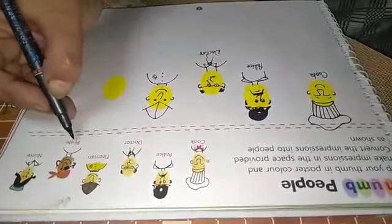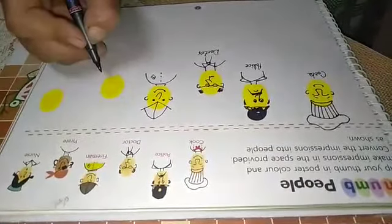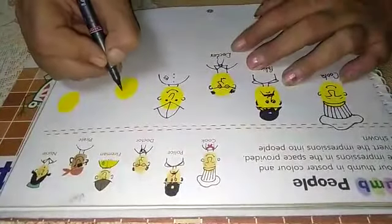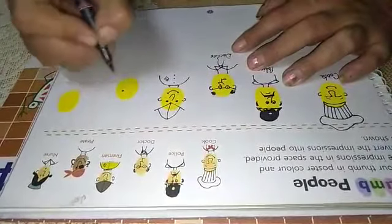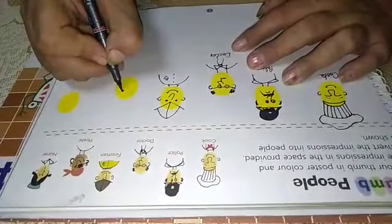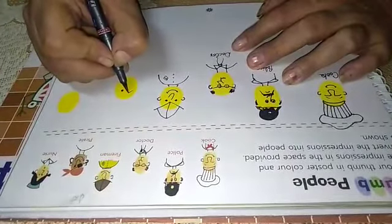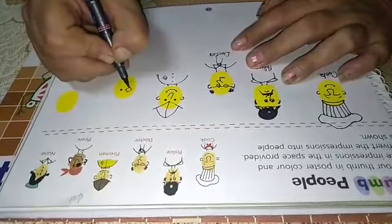Now, next is pirate. Firstly, we will make eye. Now, on second eye, we have to put one black cloth.